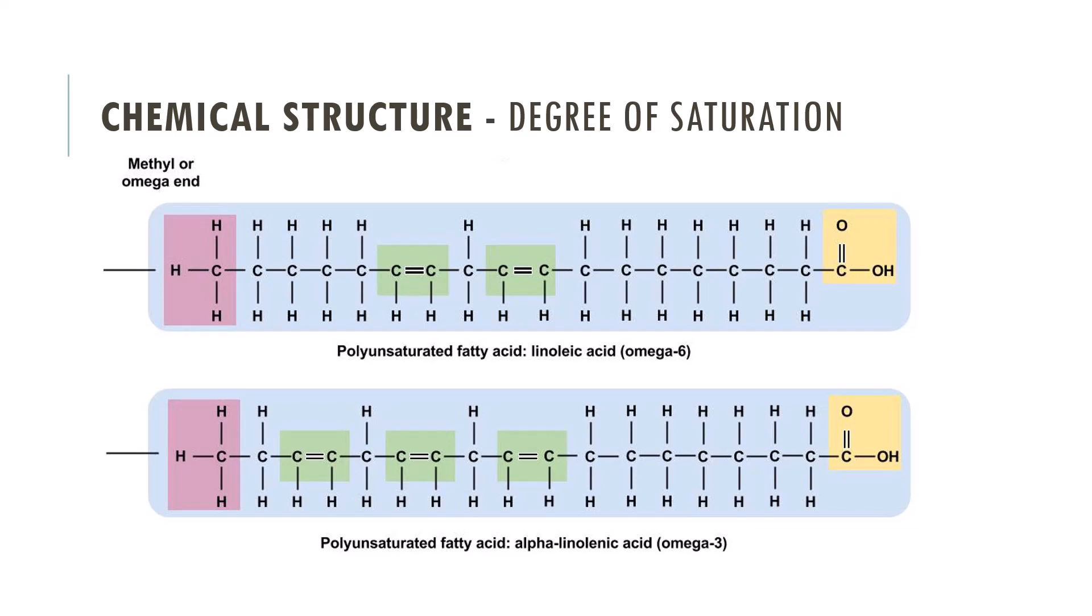These points of unsaturation are not as stable as the saturated fatty acids were. They're more vulnerable to oxidation, where oxygen can come along and alter the structure, making it more susceptible to rancidity. Another interesting point about the double bonds is that it introduces rigidity into the fatty acid chain, creating a kink in the chain, and that alters the physical properties. So the unsaturated fats are typically liquid at room temperature.